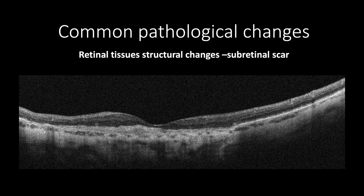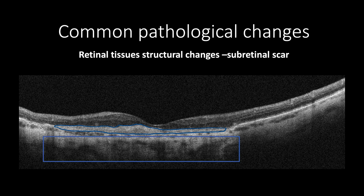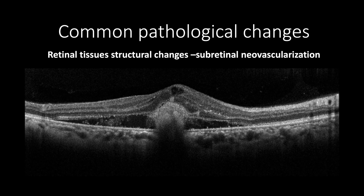Subretinal scar features a consolidated subretinal mass with homogeneous hyperreflectivity. This is a case of advanced age-related macular degeneration that features a disciform scar appearing as a consolidated subretinal mass with loss of ellipsoid zone and increased reflectivity of the thinned choroid due to RPE atrophy. In contrast, when the subretinal mass is amorphous, it may contain blood, fibrin, and vascular elements. Therefore, the amorphous subretinal mass may indicate classical subretinal choroidal neovascularization.